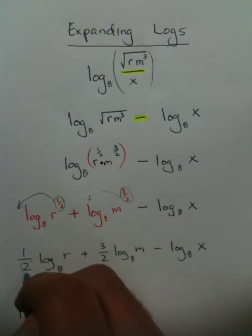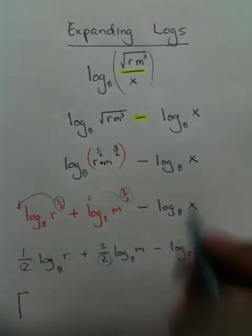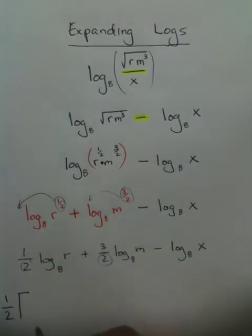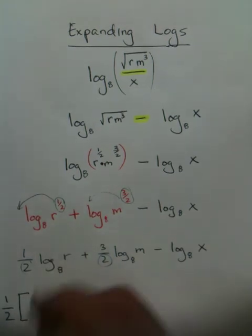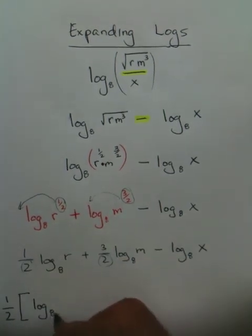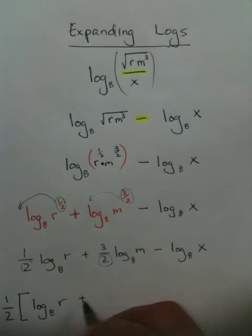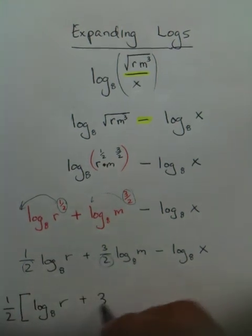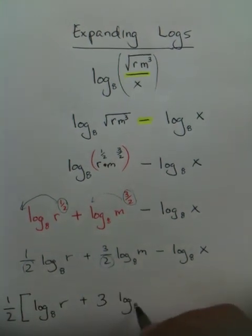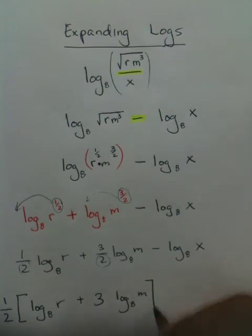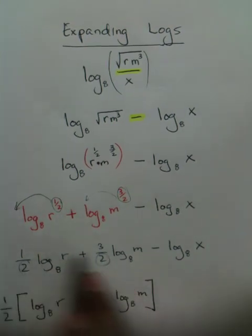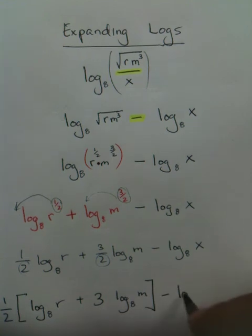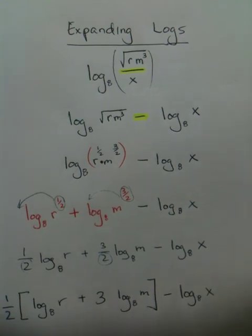So really what you're doing is you're saying, all right, they have this denominator of 2 in common, one-half. So we pull it out of the problem, and then we pulled out the one-half, which left only a 3. Put brackets because all we factored out was from these two, and then minus log sub 8 of x over here.